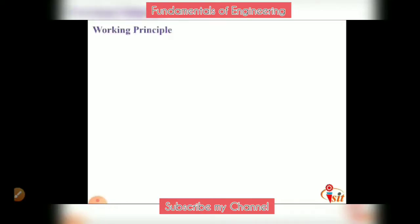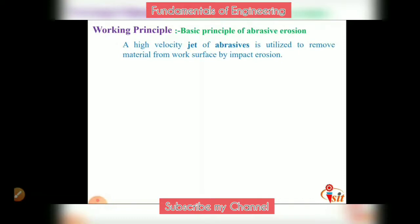The basic principle of abrasive jet machining is abrasive erosion, where a high velocity jet of abrasives is utilized to remove material from the work surface by impact erosion. High velocity jets of abrasives are passed from the nozzle, impact on the workpiece surface, and due to this high velocity impact, abrasive erosion takes place and material is removed from the workpiece surface.